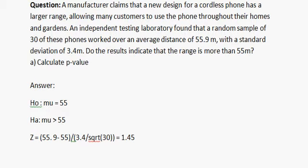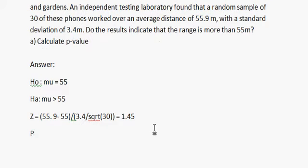Now p-value equals the probability of Z greater than 1.45, which equals 0.0736. That is the answer.